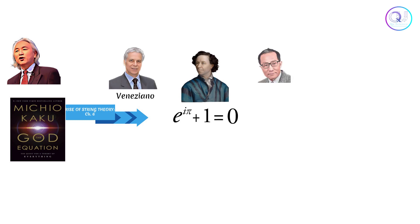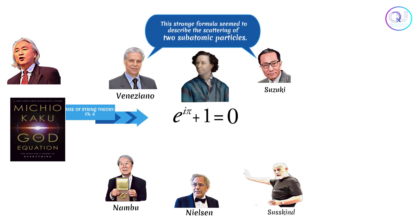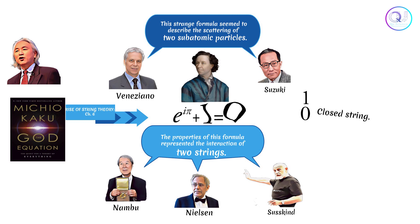In relation to citations from the book 'God Equation,' in 1968 two young physicists, Veneziano and Suzuki, realized that this strange formula seemed to describe the scattering of two subatomic particles. Later, physicists including Nambu, Nielsen, and Susskind realized that the properties of this formula represented the interaction of two strings. Through Euler's identity, we can conclude that two strings from the equation are zero, representing a closed string, and one, representing an open string. Therefore, we can state that Euler's identity reaches deep into the depths of existence and must be the truth. We try to match what probably occurs in the micro world, but vibration is out of control, so let us flow to the following flow.